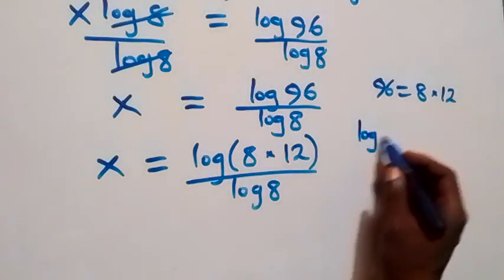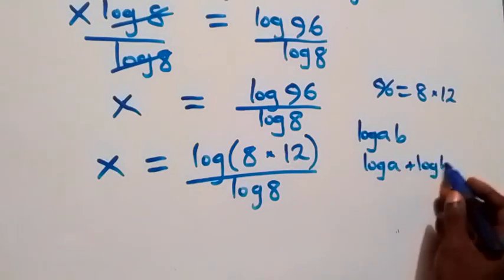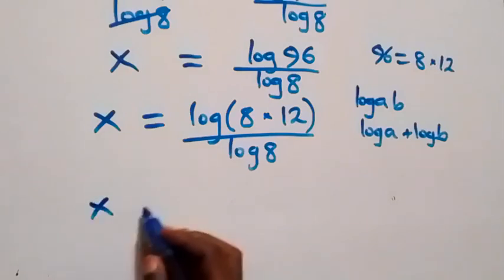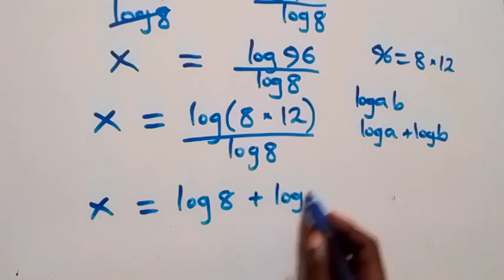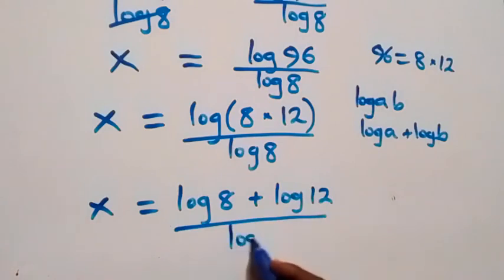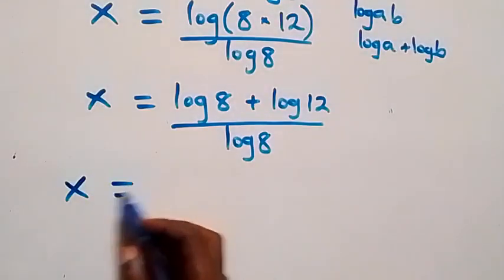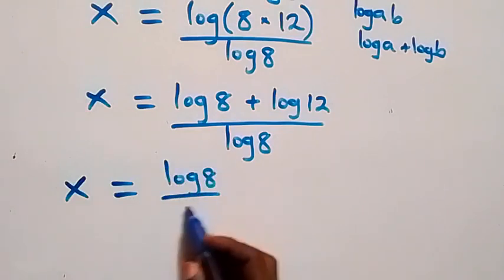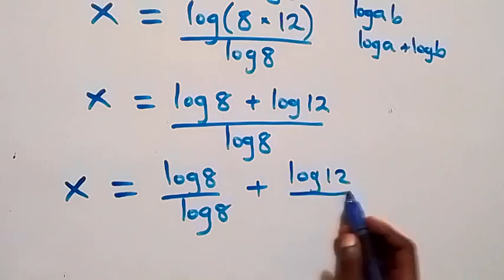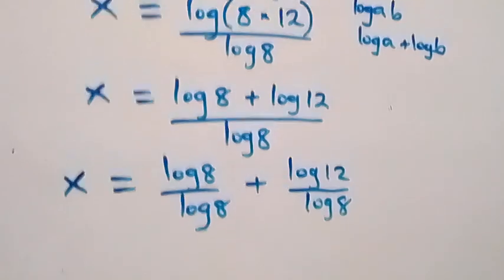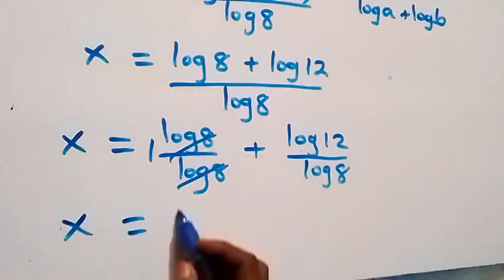Applying the logarithm product law — log(a×b) = log(a) + log(b) — this becomes x = (log(8) + log(12)) / log(8). We can separate this fraction into two parts: x = log(8)/log(8) + log(12)/log(8). Since log(8)/log(8) = 1, we get x = 1 + log(12)/log(8).